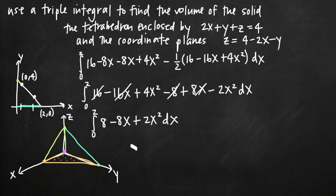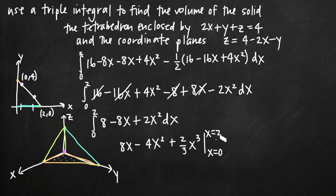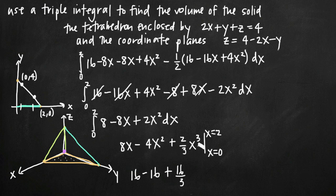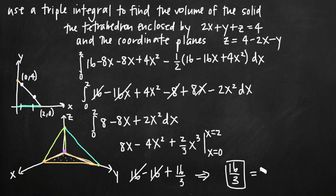Integrating with respect to x: the integral of 8 minus 8x plus 2x squared is 8x minus 4x squared plus two-thirds x cubed, evaluated from x equals 0 to x equals 2. Plugging in 2: 8(2) is 16, minus 4(4) is minus 16, and two-thirds times 8 is plus 16 thirds. The 16 minus 16 cancels, leaving a final answer of 16 thirds — the volume of the tetrahedron enclosed by the plane and the three coordinate planes.